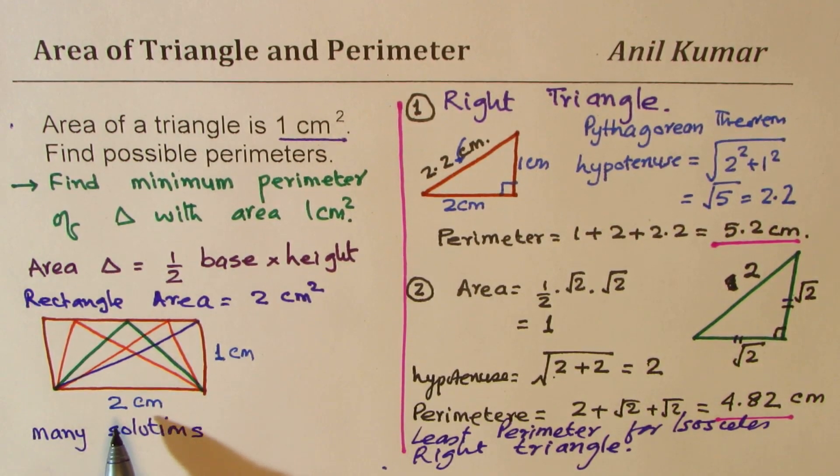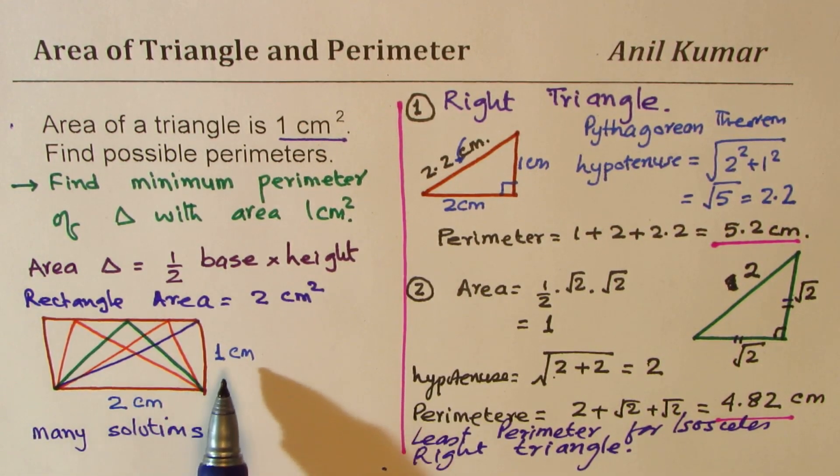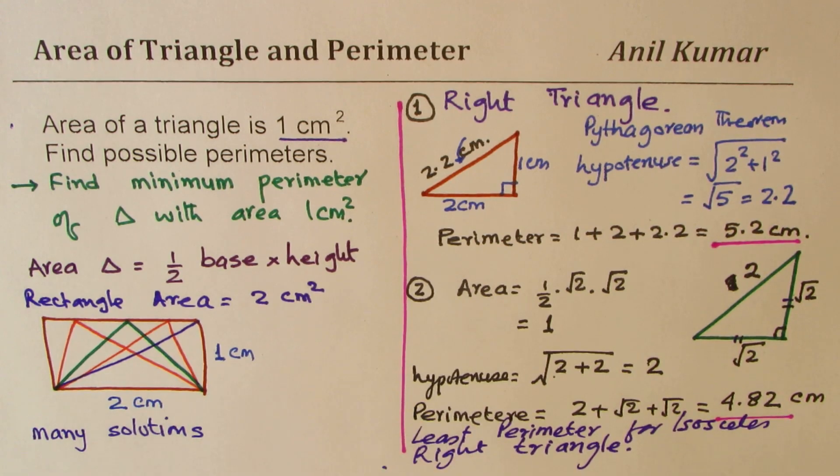You could make many rectangles with 2 centimeters squared. This is probably the simplest one, one side being 2, the other one being 1. Any triangle within this rectangle will have area of 1 centimeter squared. Now you can make a table and find perimeter for all these triangles. You will notice that it is difficult to find perimeter for triangles which are not right triangles.